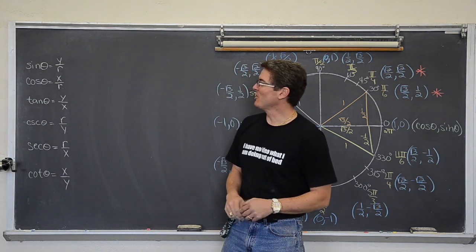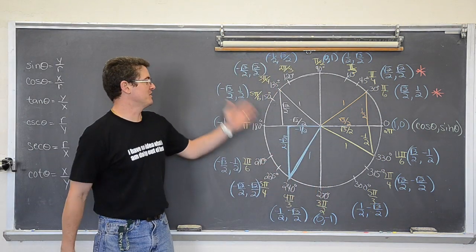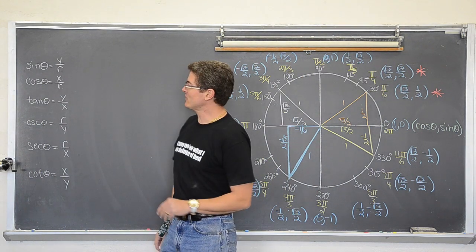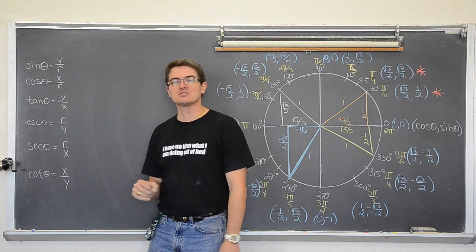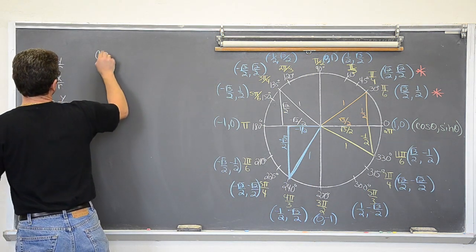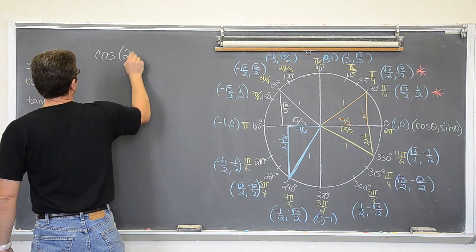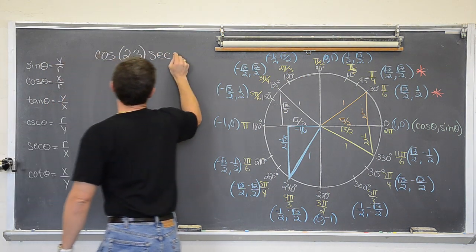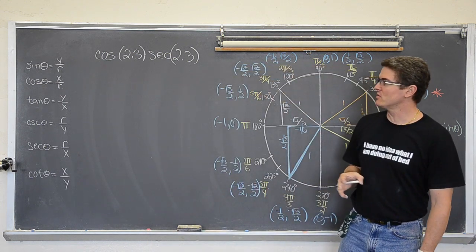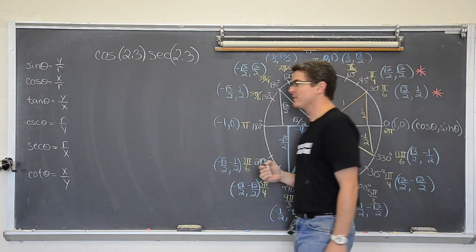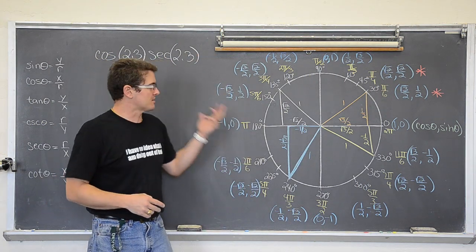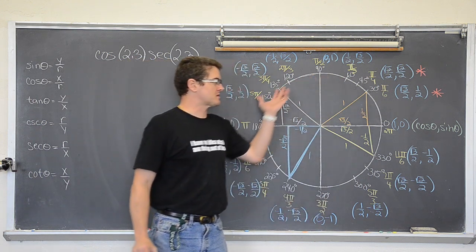Hello Mr. Tarrou. We have one last video to do before I finally erase this unit circle and start moving on to another topic and our six basic trig functions. Let's take a look at the cosine of 2.3 times the secant of 2.3 and see if we can evaluate that expression without the use of a calculator. Most questions in pre-calc or trig that ask you not to use a calculator involve angles around this unit circle.